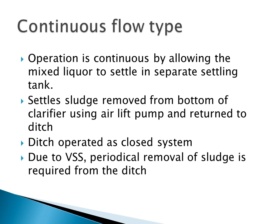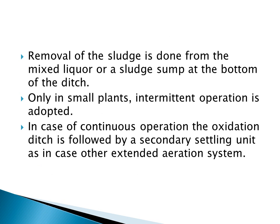In continuous flow type, the operation is continuous — the mixed liquor is allowed to settle in a separate settling tank. Sludge settles at the bottom of the clarifier, is removed using an air lift pump, and can be returned to the ditch. The ditch is operated as a closed system in continuous flow type. Due to volatile suspended solids, sludge must be periodically removed from the oxidation ditch. Intermittent operation is normally used in smaller plants, while continuous operation is followed by a secondary settling unit, similar to an extended aeration system.